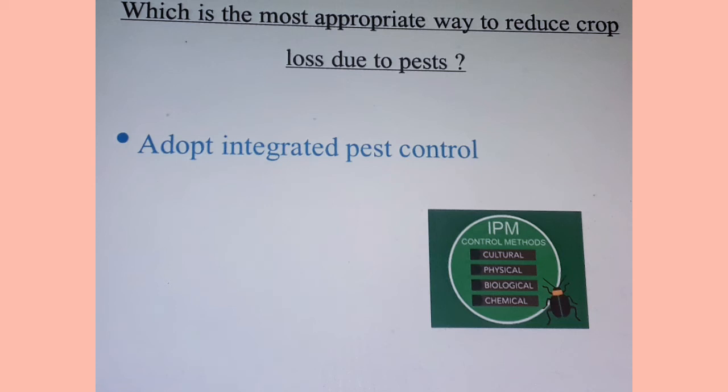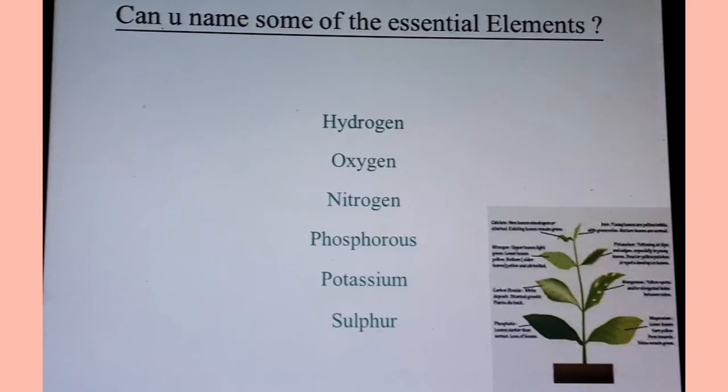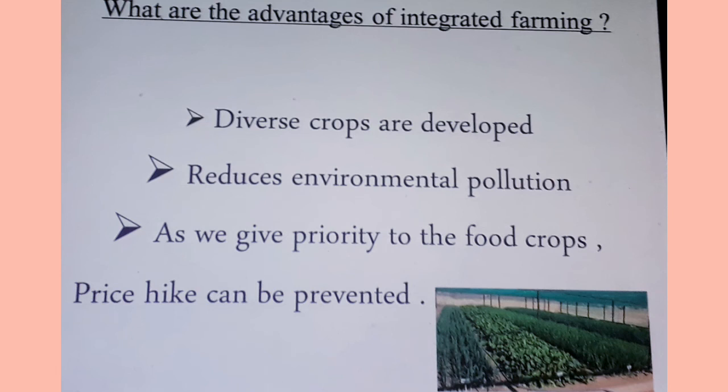Can you name some of the essential elements? Hydrogen, oxygen, nitrogen, phosphorus, potassium, and sulfur. What are the advantages of integrated farming? Diverse crops are developed, it reduces environmental pollution, and as priority is given to food crops, price hikes can be prevented.